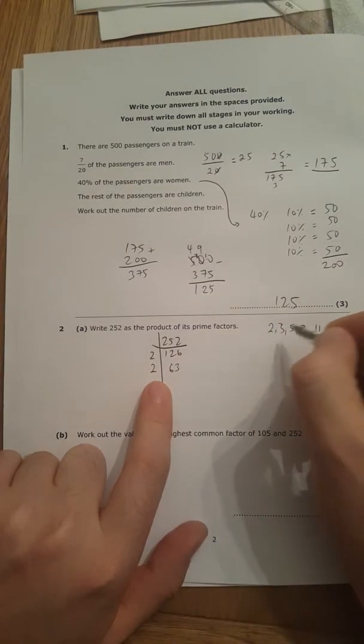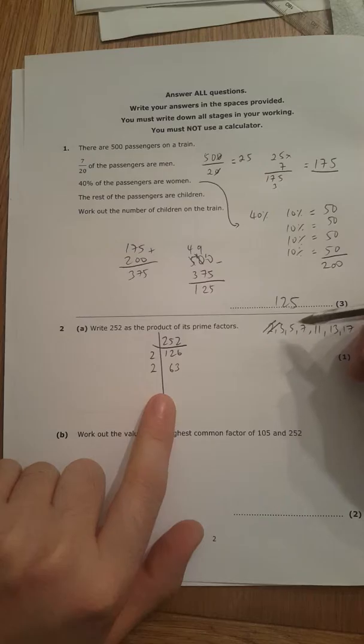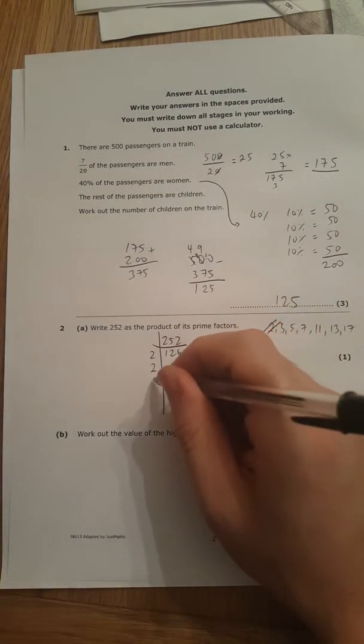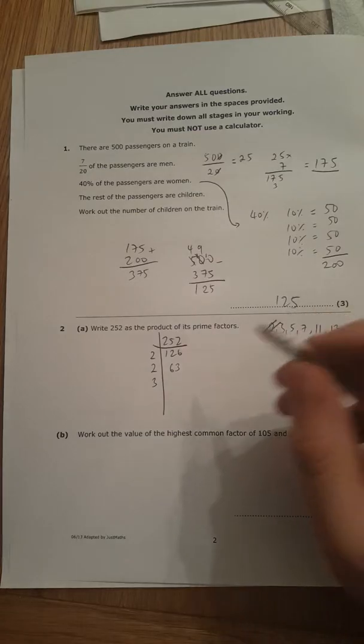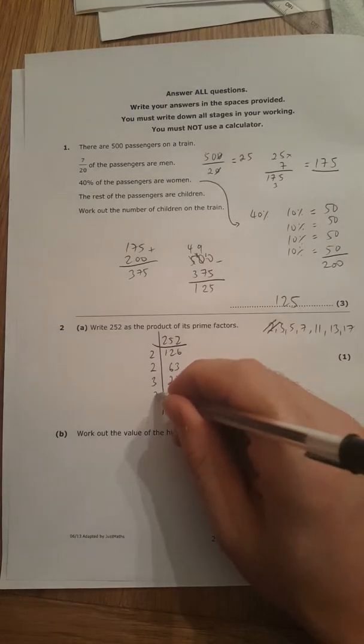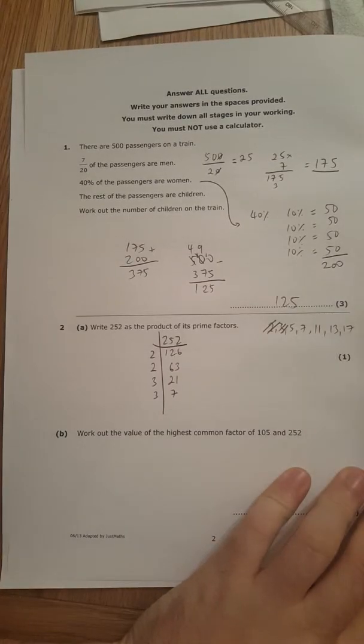So how many times does 2 go into that? Half of 120 is 60, half of 6 is 3, so that's 63. Now that's an odd number, I can't use 2 anymore. Now I'm going to go to number 3. Does 3 go into that? It does. 3 goes into 60 20 times and it goes into 3 once, that's 21.